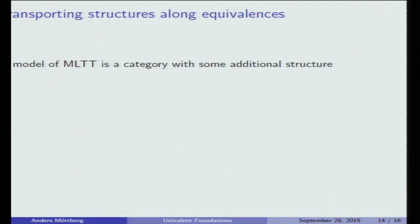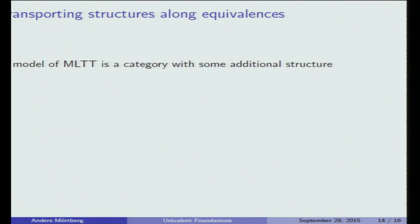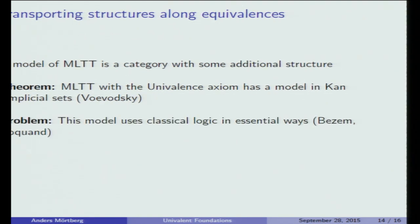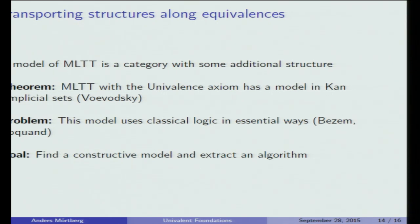One approach to tackling this problem is to look at models of type theory — a category with some extra structure. Vladimir has a theorem that Martin-Löf type theory with the Univalence Axiom has a model in Kan simplicial sets, where you interpret everything from the type theory into this model. However, this model uses classical logic in essential ways, which means you cannot use this model construction to extract an algorithm for how things compute. This was proved by Marc Bezem and Thierry Coquand during the special year.